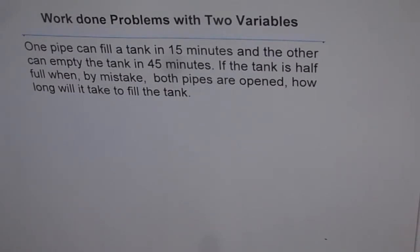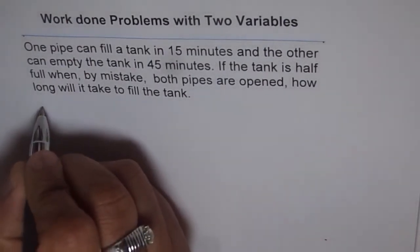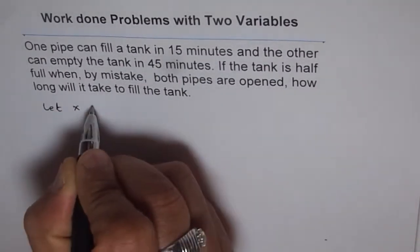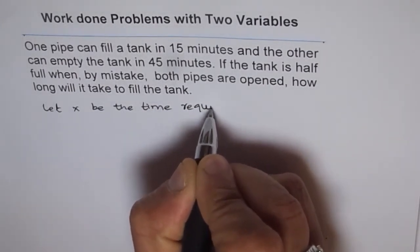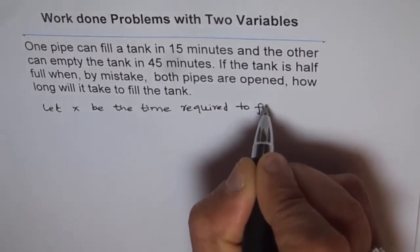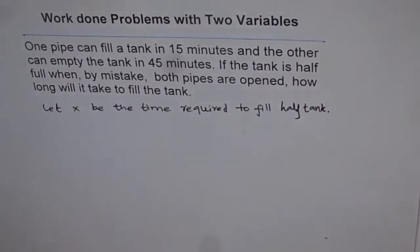When we have these kinds of problems, what we normally do is try to figure out what fraction of work is being done in one minute — in one unit of time. That is what we need to figure out and then solve the problem. We want to find how long it will take to fill the tank, which is half the tank. Let's define a variable x — let x be the time required to fill half the tank.